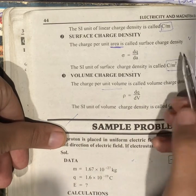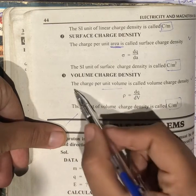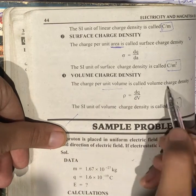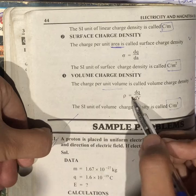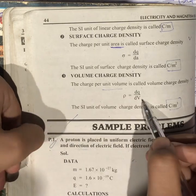Volume charge density - the charge per unit volume is called volume charge density. Rho equals dq over dv.